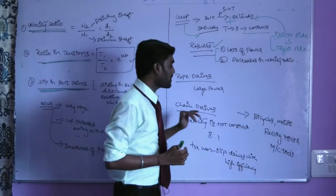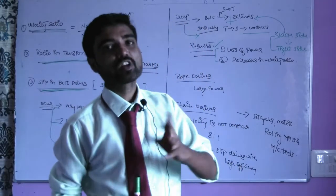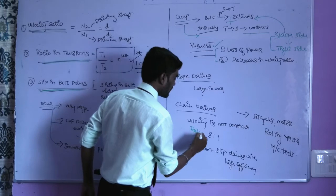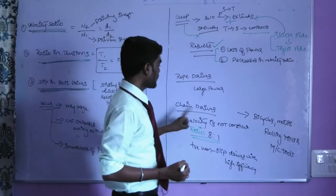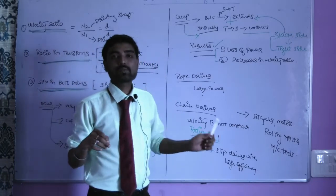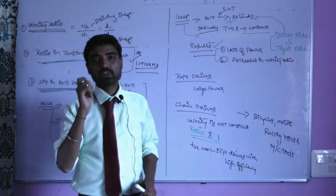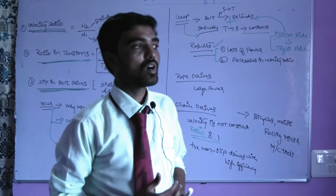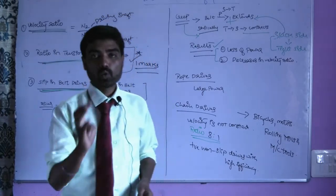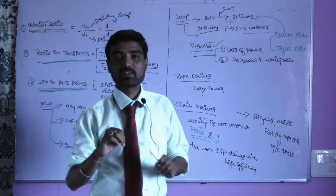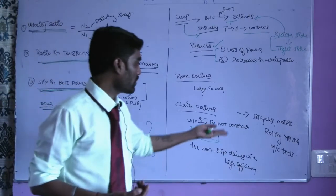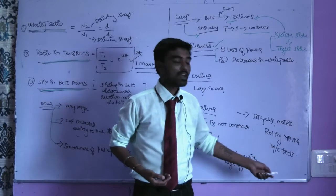When compared to chain drives, the velocity is not constant — there are fluctuations. The velocity ratio for chain drives is 8 is to 1. Chain drives are positive non-slip drives with high efficiency. Chain drives are used daily in vehicles, bicycles, motors, rolling wheels, and machine tools.